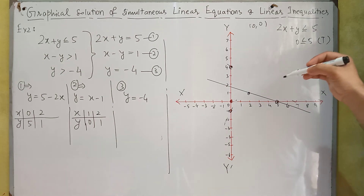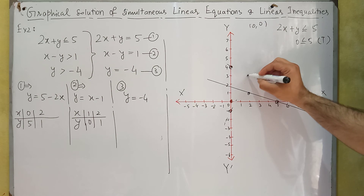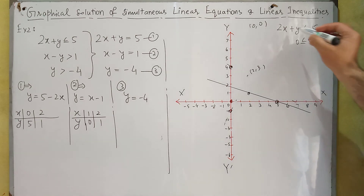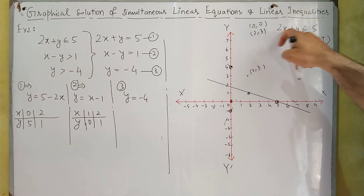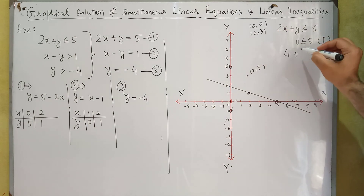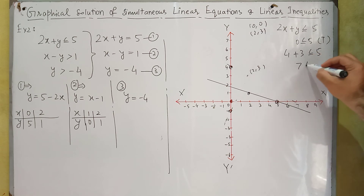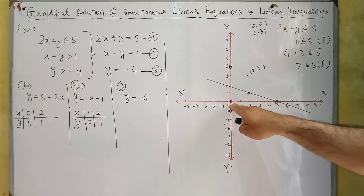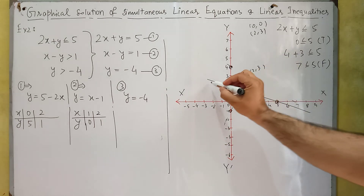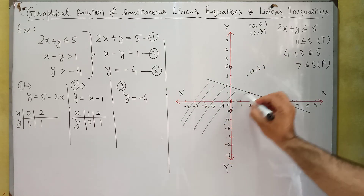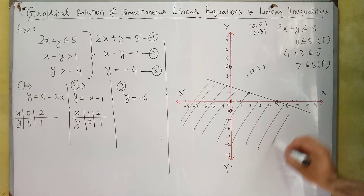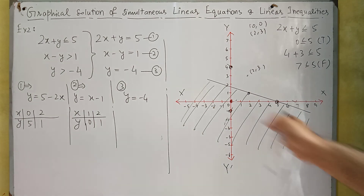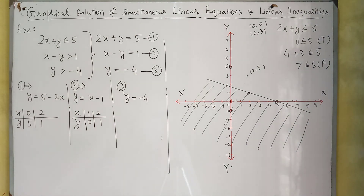Let's select another test point from the region above — say X = 2 and Y = 3. Substituting: 2 times 2 plus 3 gives 7, so 7 is less than or equal to 5. This is false because 7 is greater than 5. Since the origin test point was correct, our required region is below this line, and we shade accordingly.